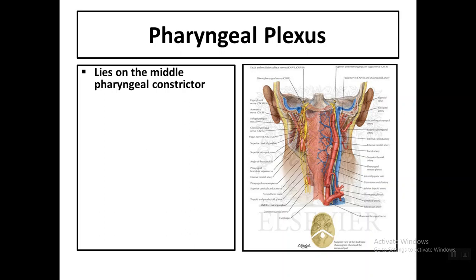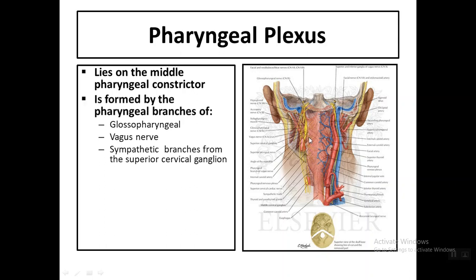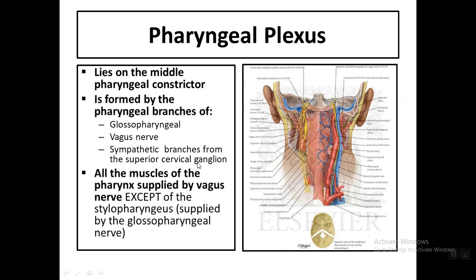The pharyngeal plexus lies on the middle pharyngeal constrictor and is formed by pharyngeal branches of the glossopharyngeal nerve, vagus nerve, and sympathetic branches from the superior cervical ganglia. All muscles of the pharynx are supplied by the vagus nerve, except the stylopharyngeus, which is supplied by the glossopharyngeal nerve.